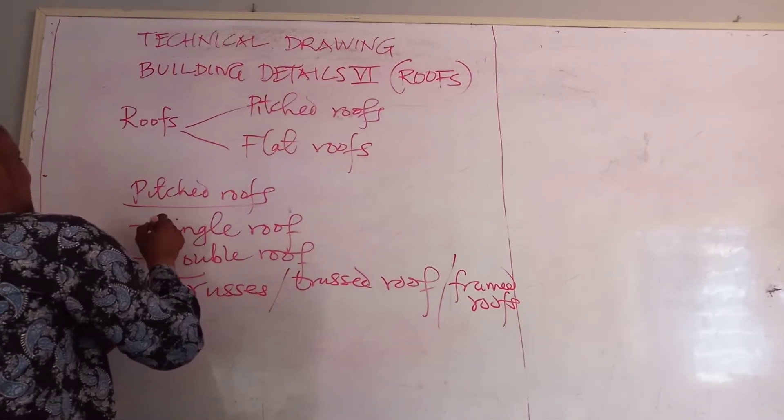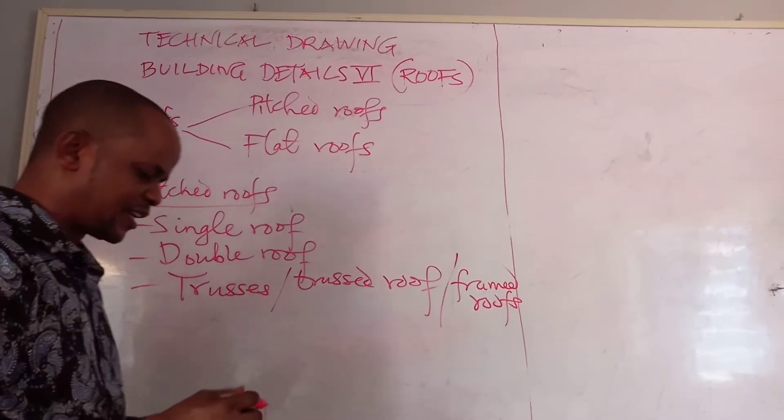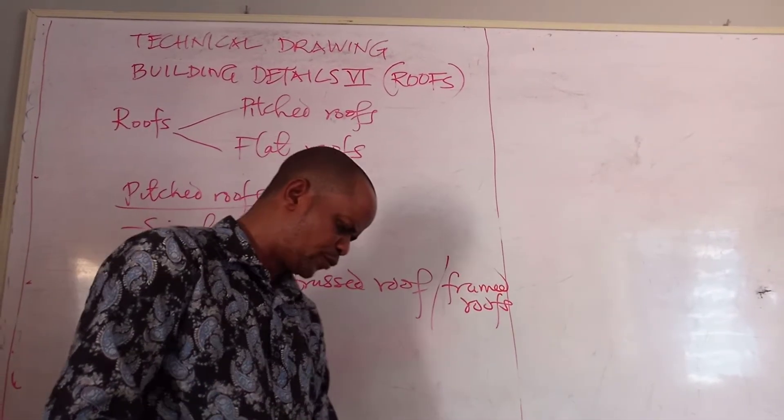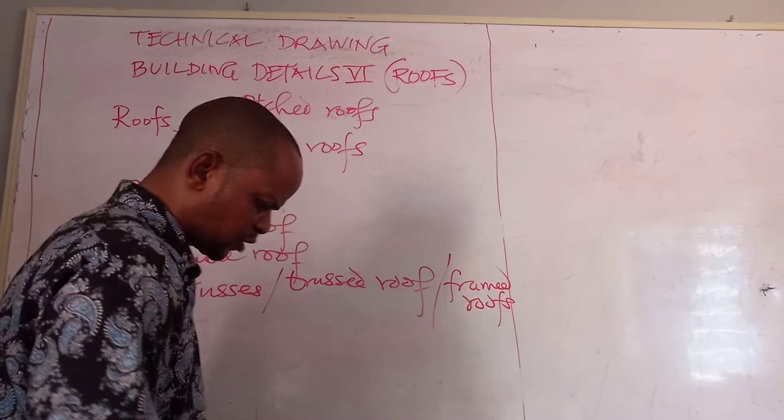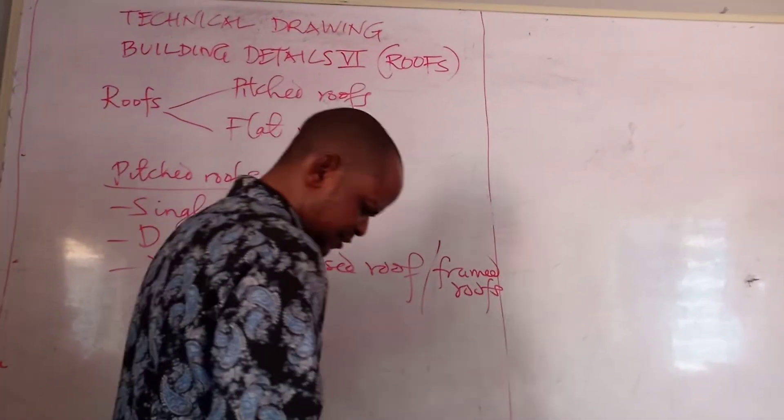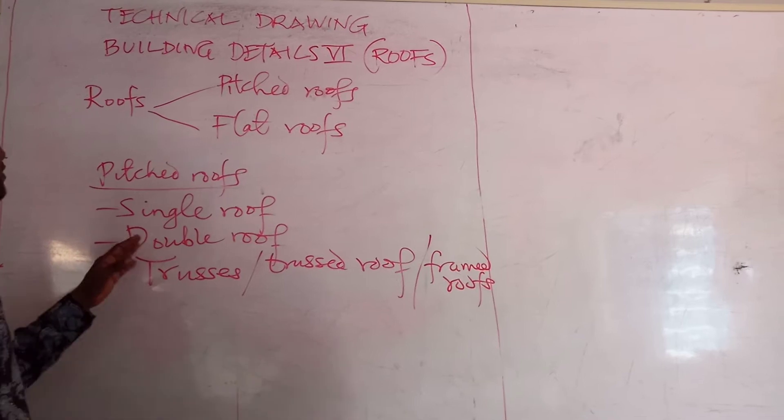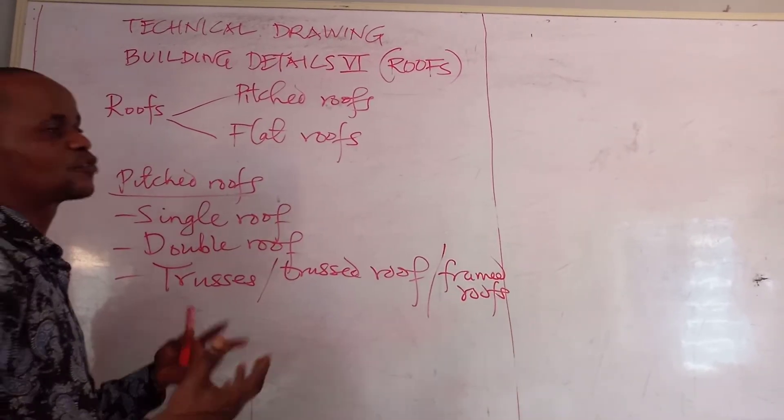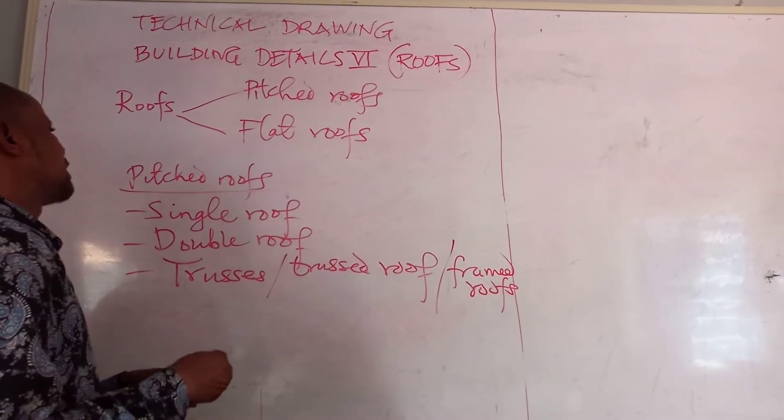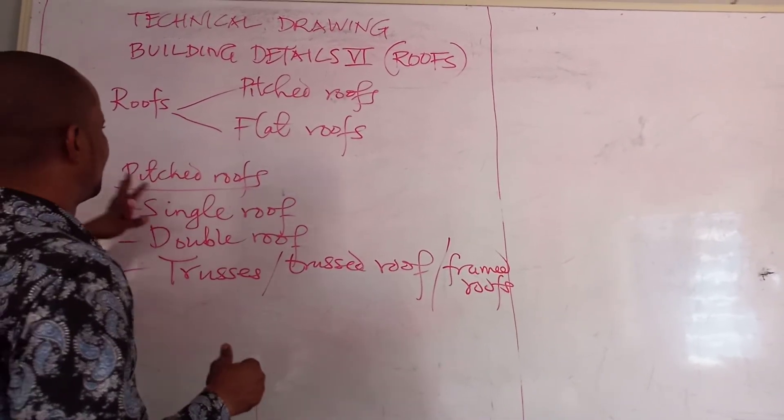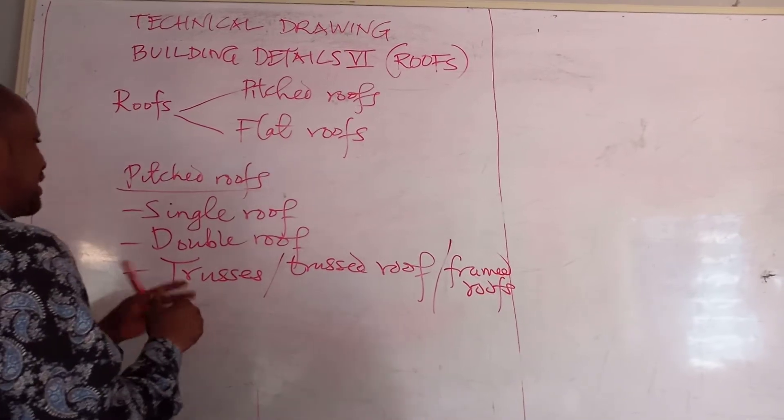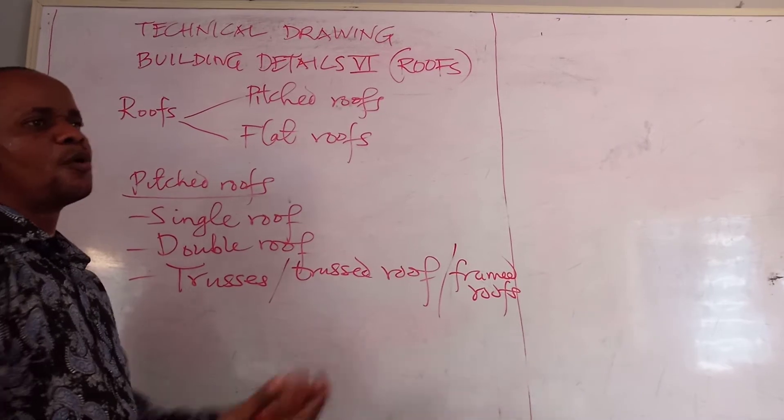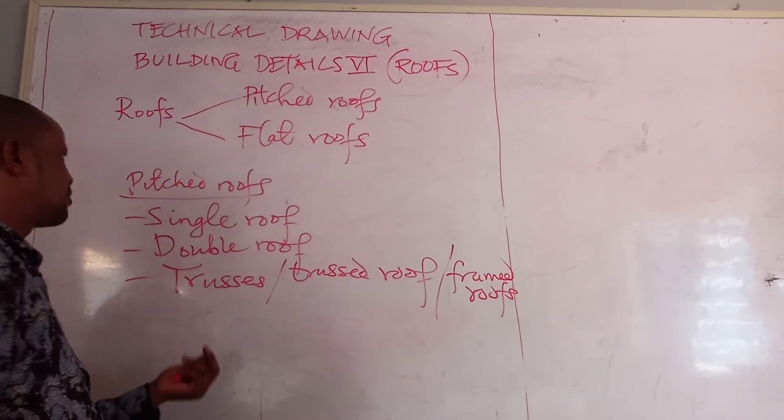Don't forget that under the single roof, we said that the determining part, whether it is a single roof, is what? Our rafter. Our rafter will determine whether the building's special trust is coming in place. Now, moving from all these pitched roofs, we can have the forms in which they will come up.